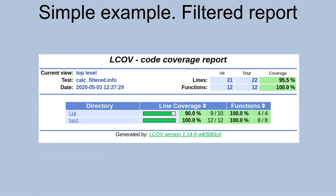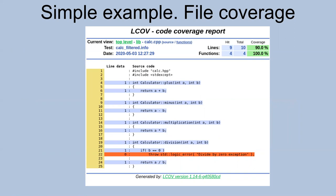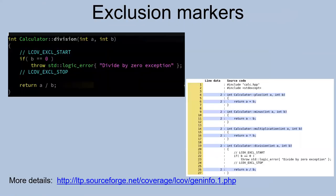We see just one directory — our library and our tests. We can check what wasn't covered by our tests. You can see that the exception case was not covered — we didn't check the second parameter of the division function. Sometimes you need to ignore some lines during test coverage, for example unimplemented functions or some legacy code you'll refactor in the future. You can use exclusion markers called LCOV_EXCL_START and LCOV_EXCL_STOP, and in the report that part of code will be ignored in test coverage.